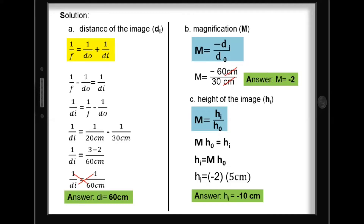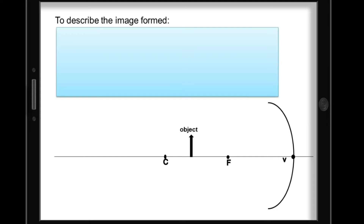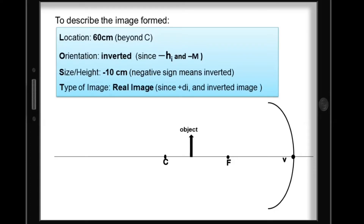Based on the results, the image is located at positive 60 cm in front of the mirror. The orientation is inverted since image height and magnification are negative. The size is 10 cm (negative 10 cm, where the negative sign means inverted). The type of image is real, since the distance of image is positive and the image is inverted.